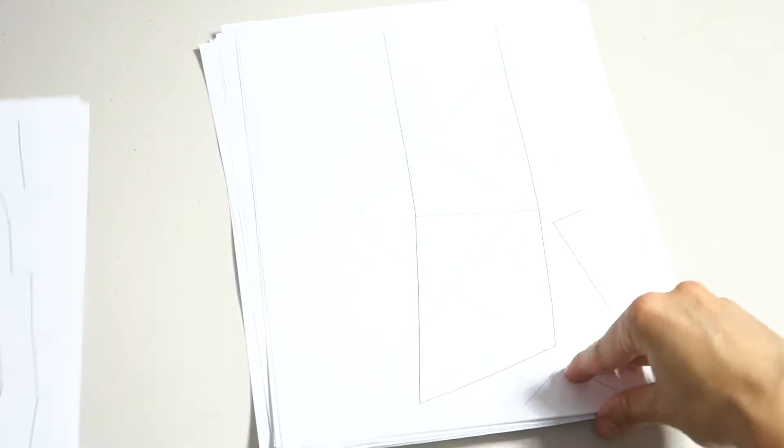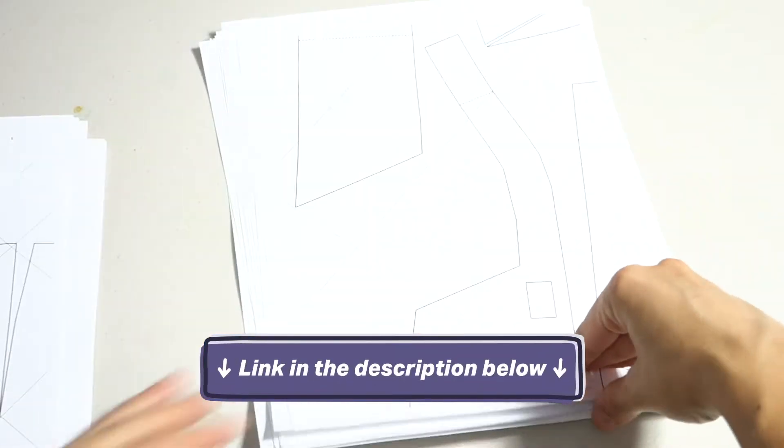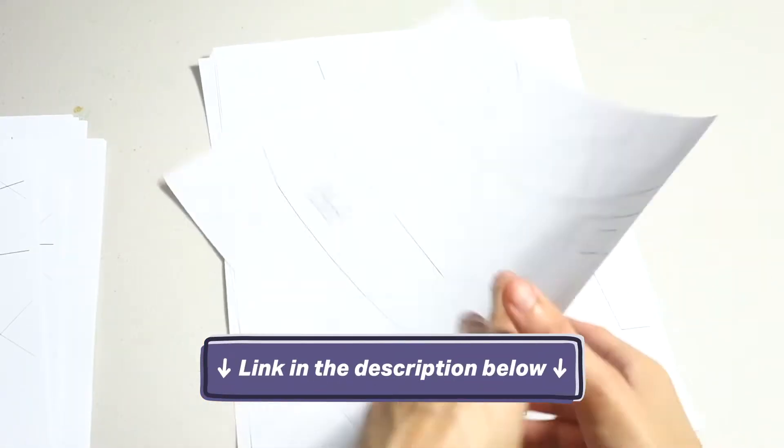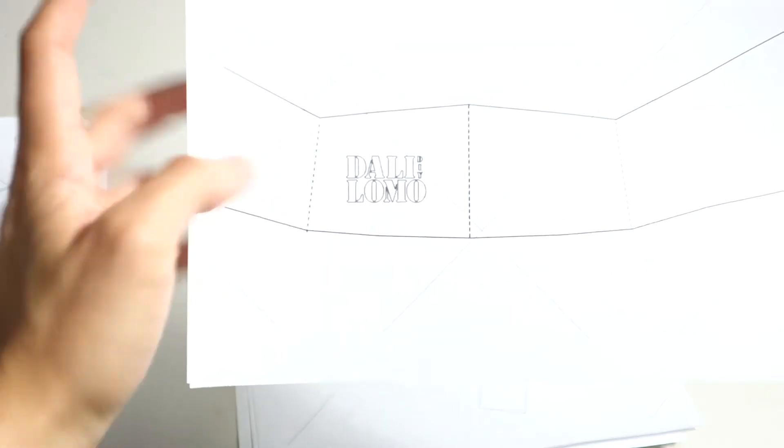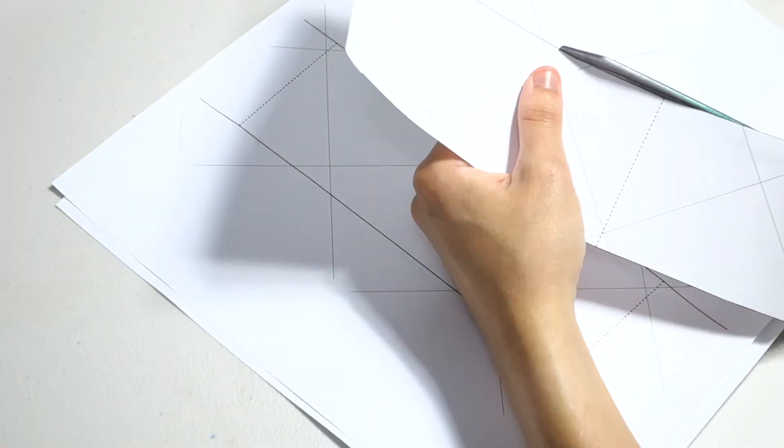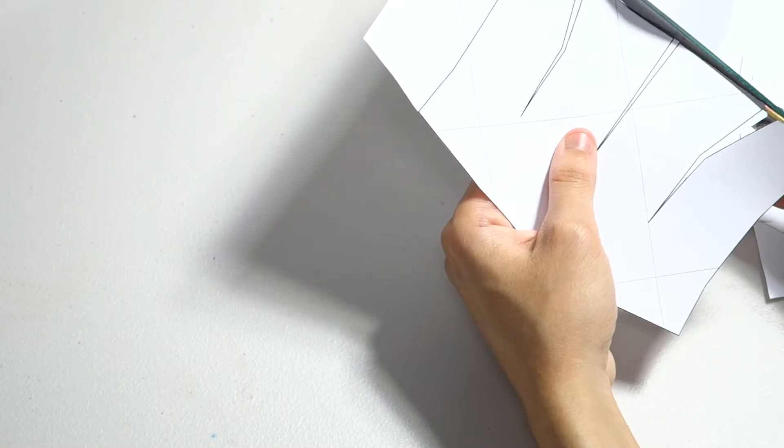The first thing you have to do is find a template. We're using Dalilomo's amazing and free template that he made for a cardboard version of the helmet. Print it out to its actual size and cut out all of the pieces. Some will be cut off, so you'll have to tape them together.